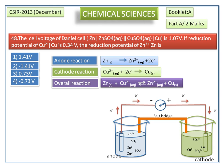The standard cell potential E_cell is the difference of the two electrode potentials forming the cell voltage. To find this difference, we use the formula: E_cell = E_R − E_L, where E_R is the standard reduction potential at the right side and E_L is the standard reduction potential at the left side.